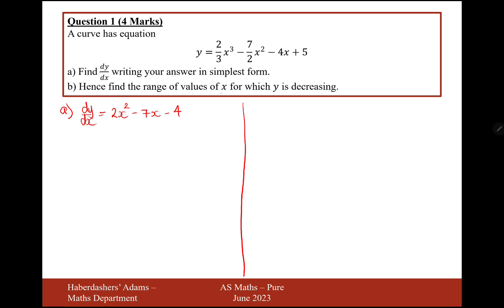Part b, hence write down the range of values of x for which y is decreasing. If y is decreasing, then that means that dy by dx is less than 0.